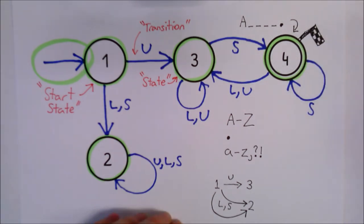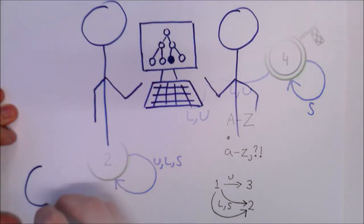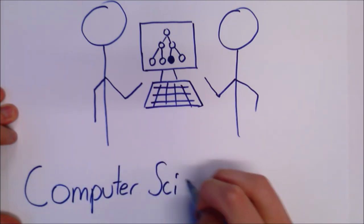We can have any number of accepting states. Even the start state can be an accepting one, but we can only have one start state.